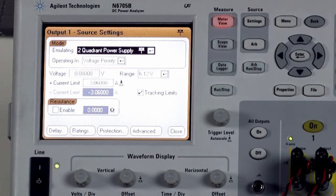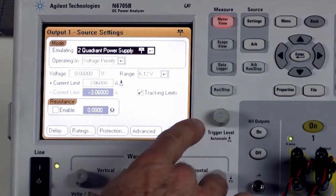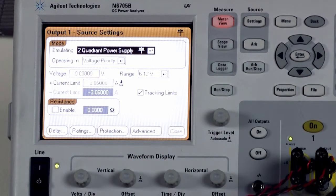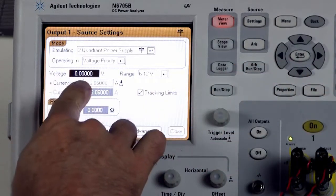This is a two quadrant power supply which allows you to sync or source current with a positive voltage. We're not worried about that or most of the settings, but what we do want to do is simulate the three volt battery in our pulse oximeter. So I'm going to use the arrow keys to toggle down to the voltage section and select three volts and enter that.